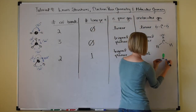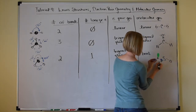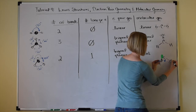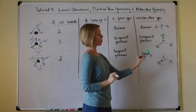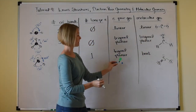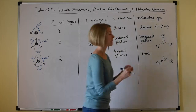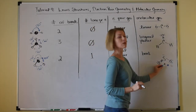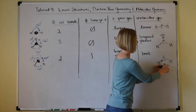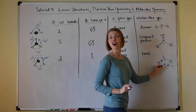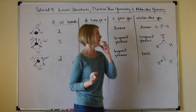Sulfur dioxide is an example of this. You can see the trigonal planar arrangement for all three charge clouds, but when we name the molecular geometry we focus on the shape of just the atoms — and they are bent, not linear. The lone pair of electrons is what makes it bent rather than linear — that's very important.